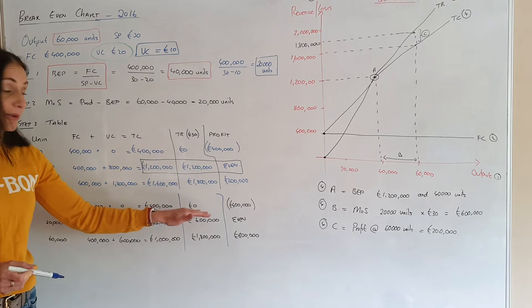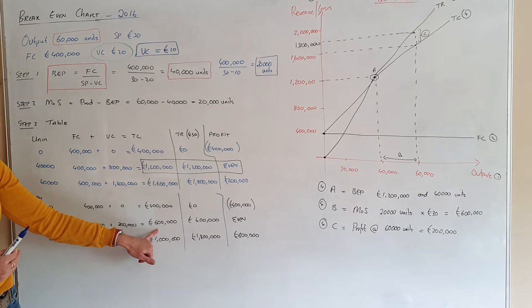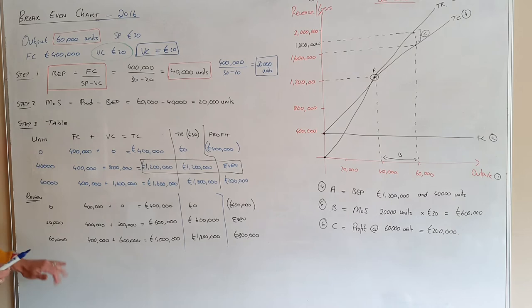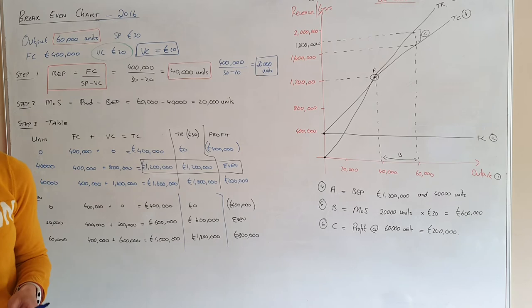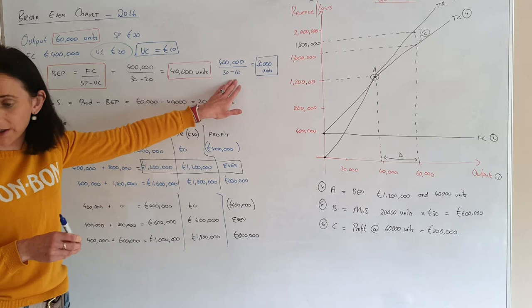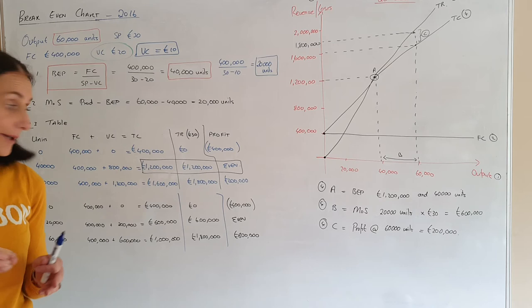For zero units you still have the fixed cost of £400,000 and you can't sell anything. At the new break-even point of 20,000 units the total cost would be £600,000 and revenue would also be £600,000 — that's where they're even. At 60,000 units you'd make a profit of £800,000. The question says to calculate the new break-even point — that's done. It also says to illustrate how the decrease in variable cost affects the total cost line. It's only asking you to move the total cost curve, not the total revenue line.